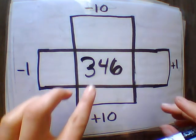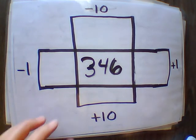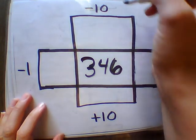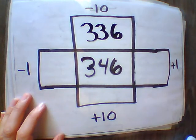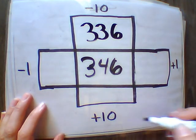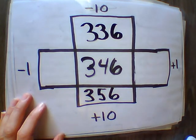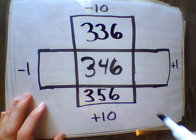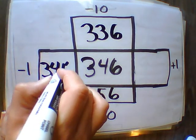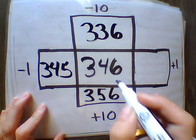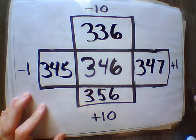All right. So remembering the hundreds will stay the same because we're only working with tens and ones. So 346 minus 10 is 336, 346 plus 10 is 356, 346 minus 1 is 345, 346 plus 1 is 347.